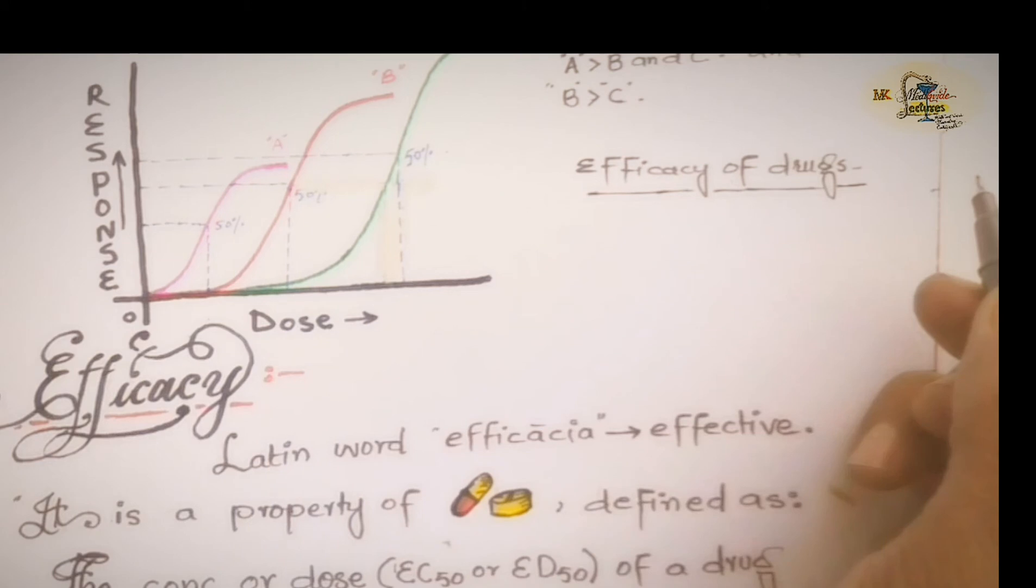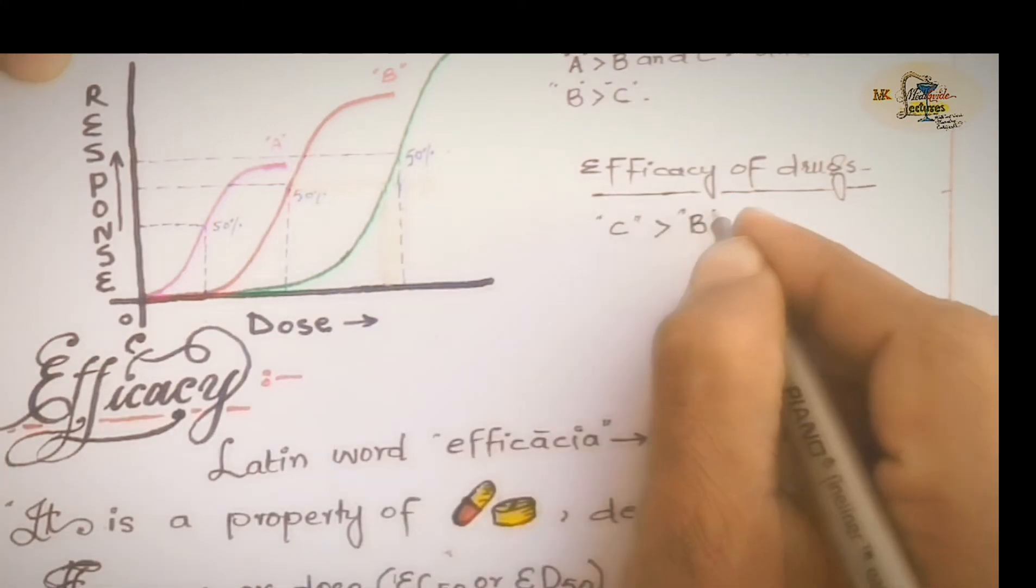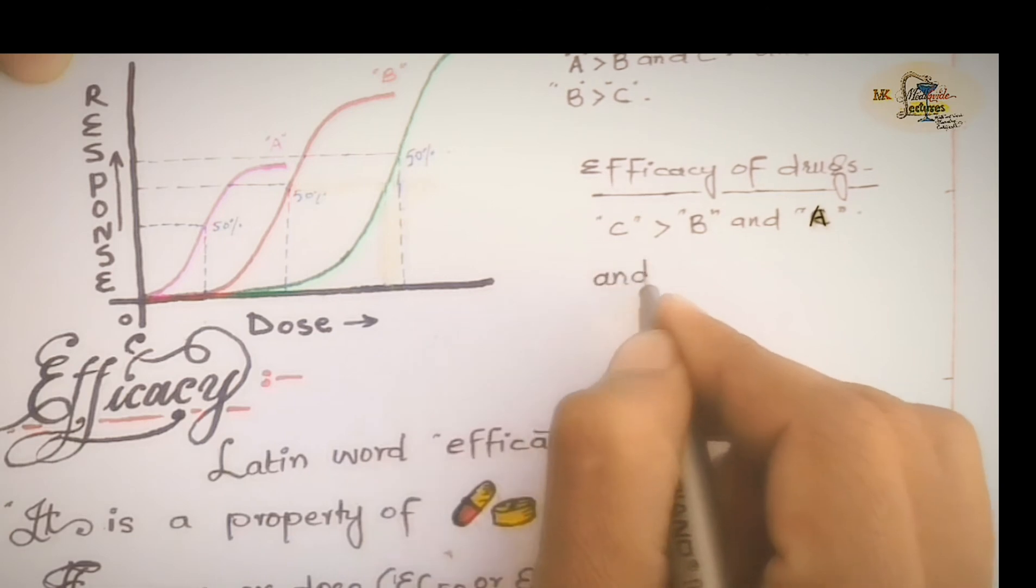In this example, all of the three drugs A, B, and C show efficacy but which are not the same because drug C has the highest level of response, so it is said to be more efficacious than drug B and A.